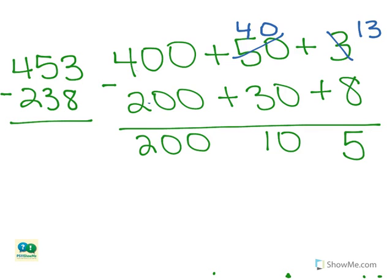Then, we add the hundreds, tens, and ones back together to find the answer. 200 plus 10 plus 5 equals 215.